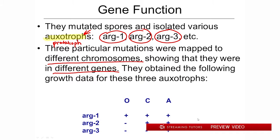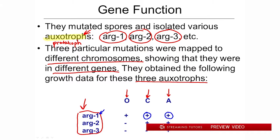There's a table here showing growth data for the three different auxotrophs. Here are the three auxotrophic mutants — arg-minus-1, -2, and -3. O stands for ornithine, C for citrulline, and A for arginine. If you take arg-minus-1, giving it arginine allows it to grow — that plus means growth occurs. But interestingly, if you give it citrulline, it also can grow.